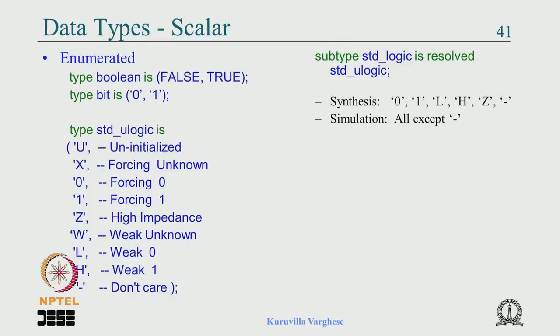To wrap up: we covered the four object classes — signals, constants, variables, and files — and data types: scalar (enumerated, integer, float) and composite (array, record). Please go back, revise, and refer to the textbook. Thank you and all the best.